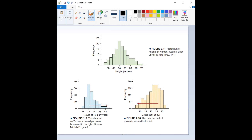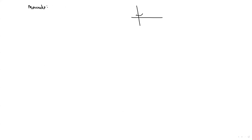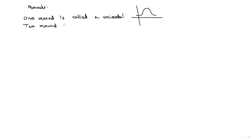Let's move on to the next characteristic of shape: how many mounds? One mound — if you had a data set that just went up and came back down, that's a single peak. One mound is called a unimodal distribution. Two mounds — can you guess? It's called a bimodal distribution, like a bicycle. More than two mounds is called a multimodal distribution.